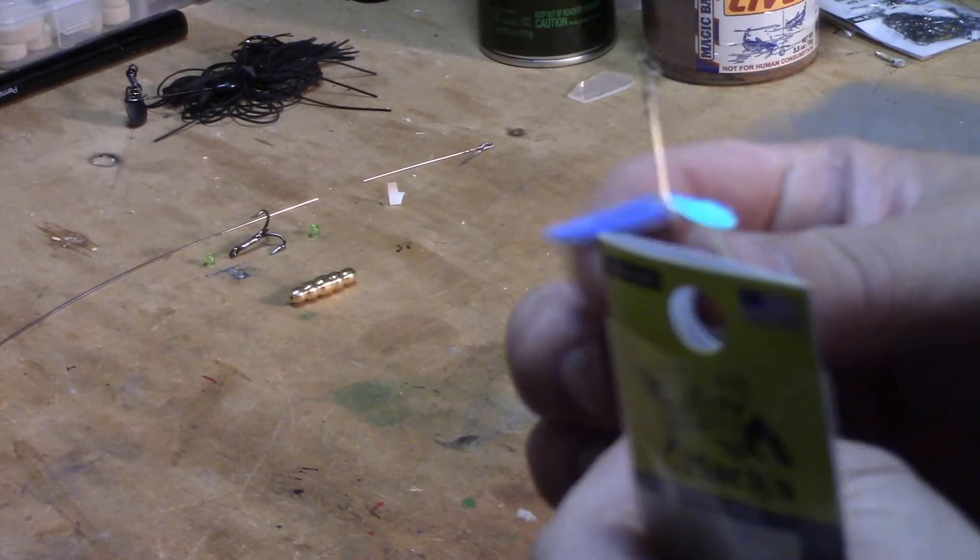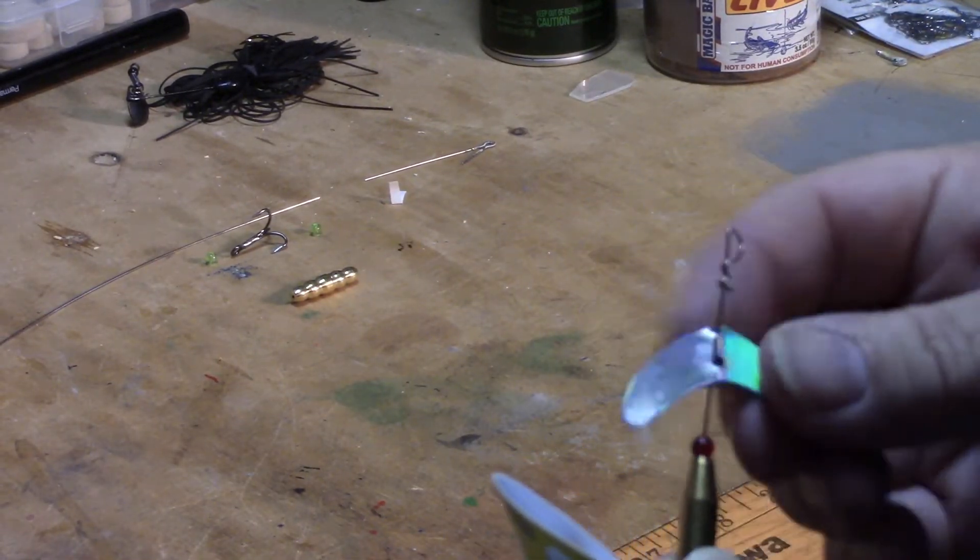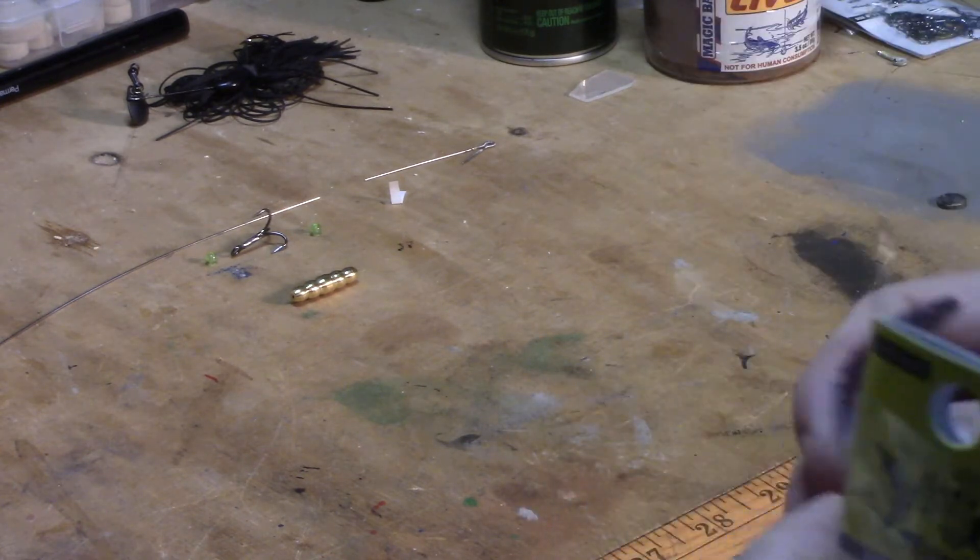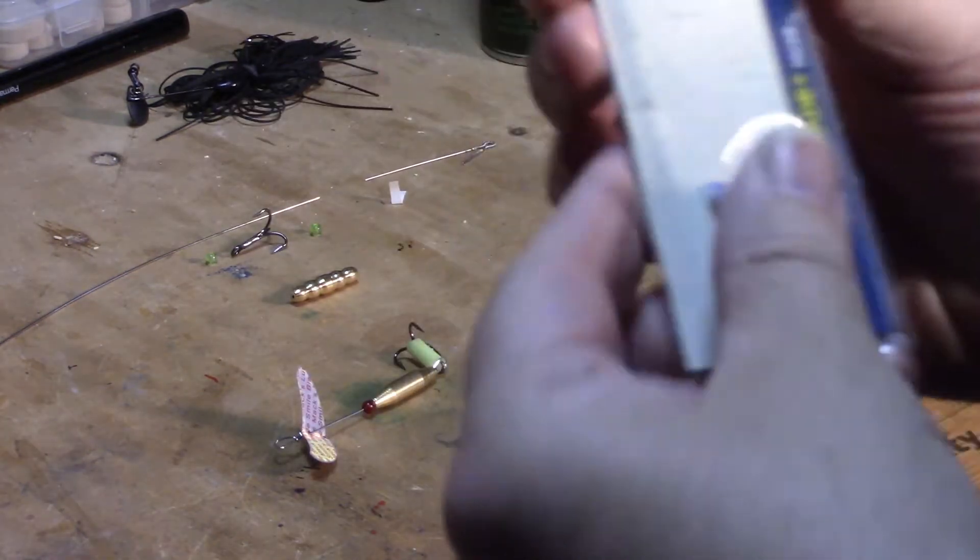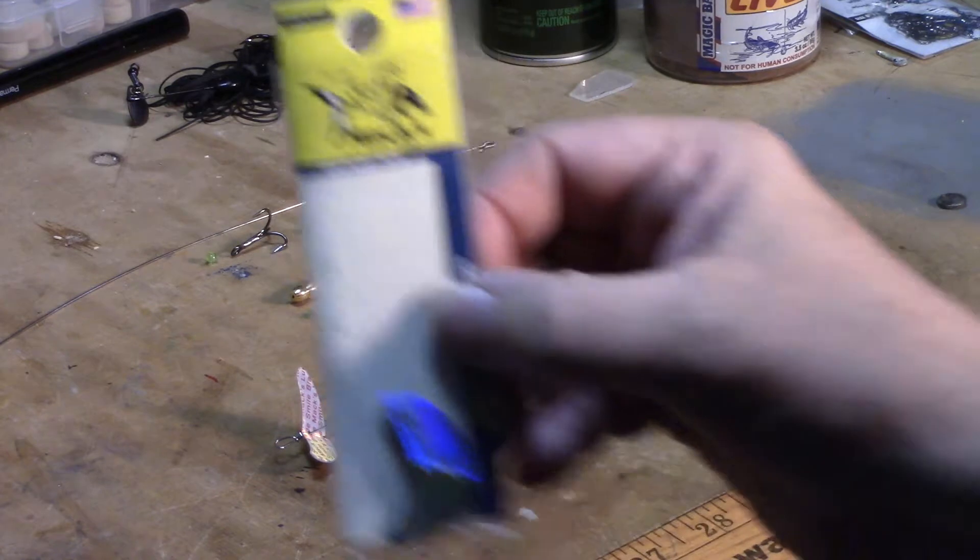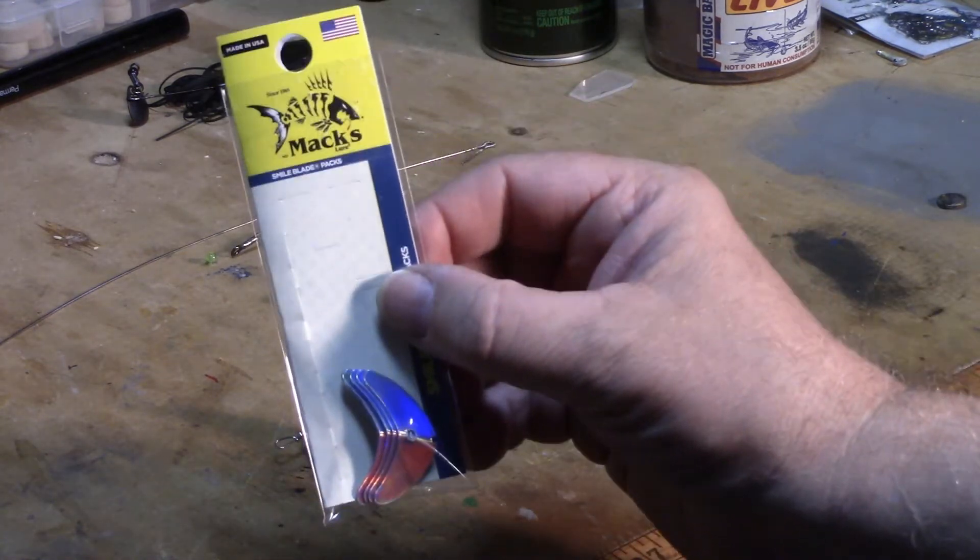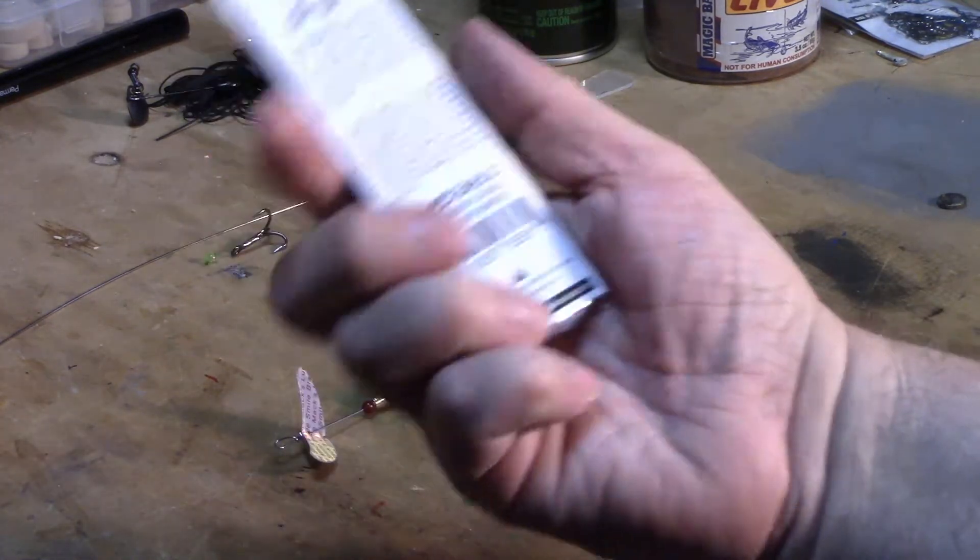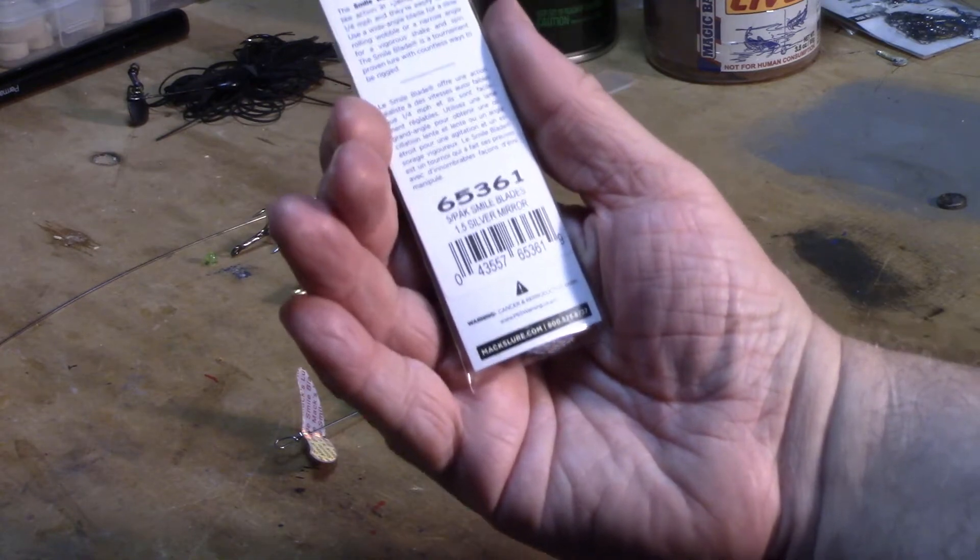So today we're going to make a little lure out of this guy here. This is called a Smiley Blade. Here's the package here. It is made by Max Lures. MaxLures.com if you want to check them out.